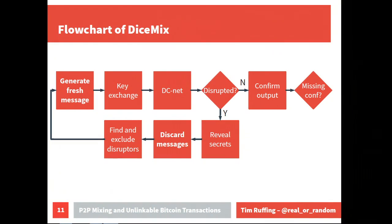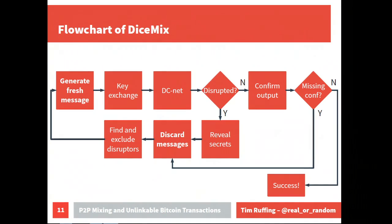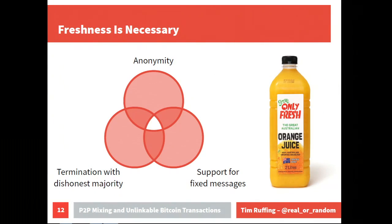There's another way the protocol can be disrupted: what if not everybody confirms the output? DiceMix guarantees that if you don't confirm at that step, you are identified as malicious. So if someone refuses to confirm, we exclude them, discard the message, and start from scratch. If everybody provides a confirmation, the protocol succeeds. The requirement to generate fresh discardable messages is not arbitrary — it's necessary.